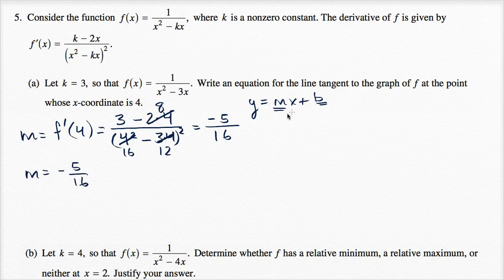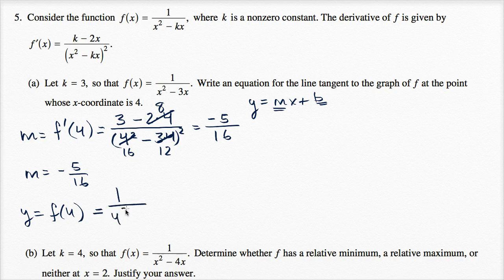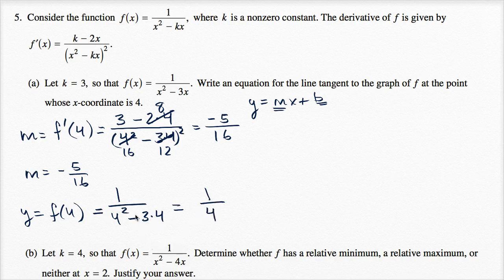Now, how do we figure out b? We need the coordinates — when x is equal to four, what is y going to be? y is equal to f of x, so y is equal to f of four, which is one over four squared minus three times four. That equals one over 16 minus 12, which is four, so y is equal to one fourth.